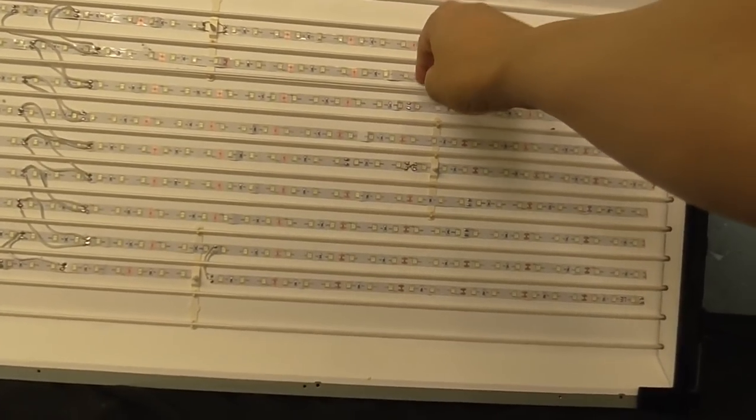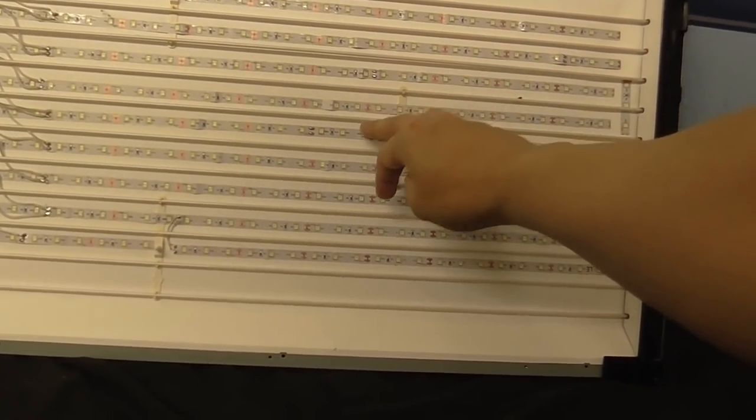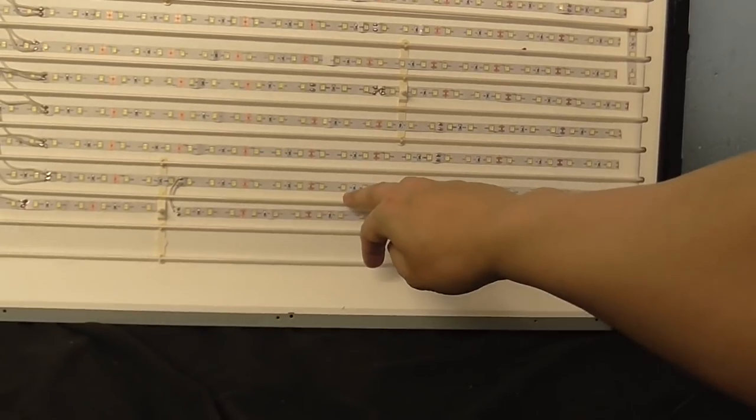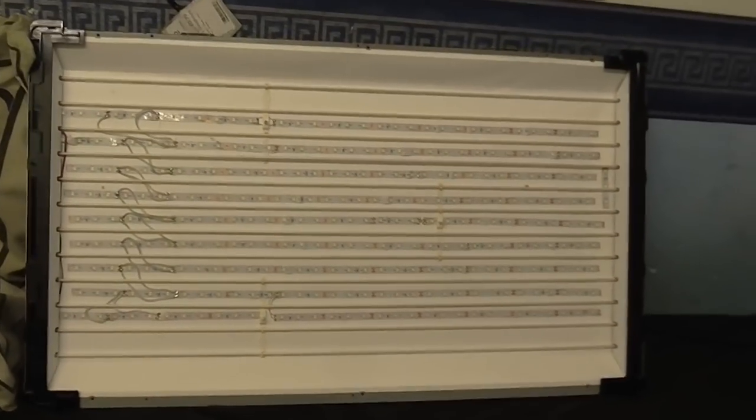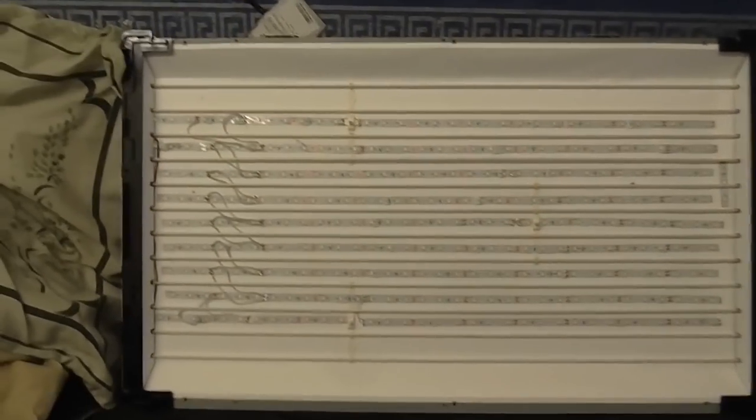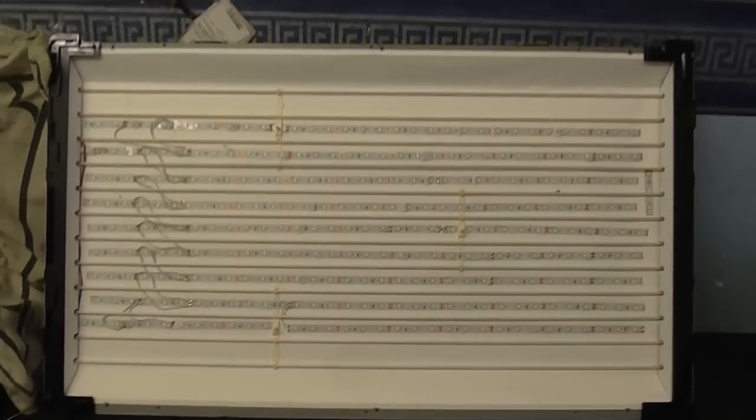I think the first thing to do is get all these CCFLs out. I've got one, two, three, four, five, six, seven, eight, nine, ten, twelve. Try to get those out without breaking them. Then I can put the other LED strips in. I've got some more now, so I can do that.